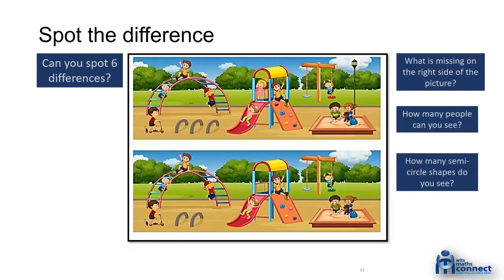I could have asked different questions — 'What's missing on the right-hand side?' would point you to the lamppost that's not there. Or 'How many people can you see?' would point to the little girl missing in the second picture. Or 'How many semicircular shapes?' pointing to the tire shapes in the bottom left. The point is: we can see difference because most of the stuff hasn't changed. I want to take this idea into variation theory and mathematics.